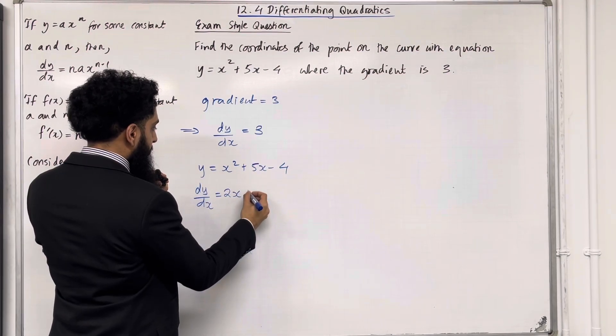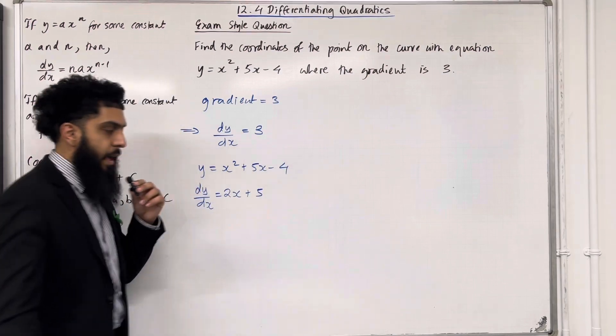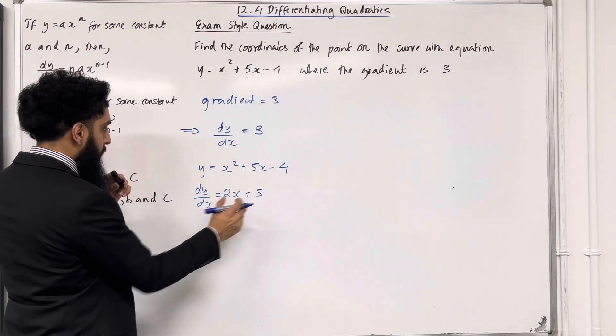If you differentiate 5x, that becomes 5. And if you differentiate the minus 4, that becomes 0. So this here is my dy over dx.